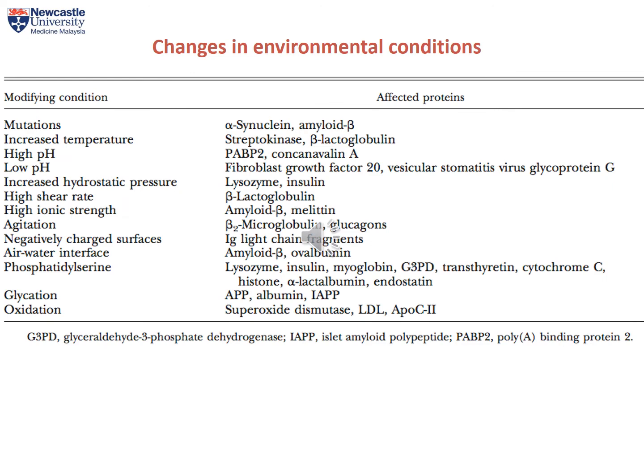Shown in this table is a list of conditions — both chemical and physical — that can lead to protein misfolding. Conditions such as temperature, pH, or even agitation and oxidation can lead to misfolding of proteins.